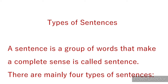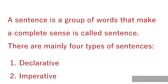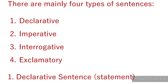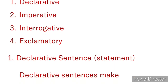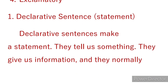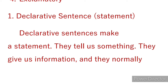If a group of words gives incomplete sense, we call it a phrase. A sentence is a group of words that makes a complete sense. There are mainly four types of sentences: first, declarative; second, imperative; third, interrogative; and fourth, exclamatory.